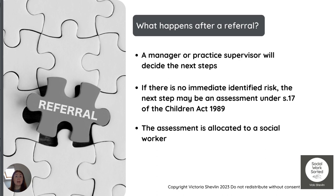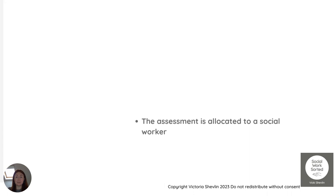But if there is no immediate identified risk, the next step may be an assessment under section 17 of the Children Act 1989, and that is what this series is going to cover. Once that decision has been made — and as a newly qualified social worker it is not on you to make that decision — the assessment will then be allocated potentially to you, or if you're a student it may be allocated for you to co-work with another practitioner.